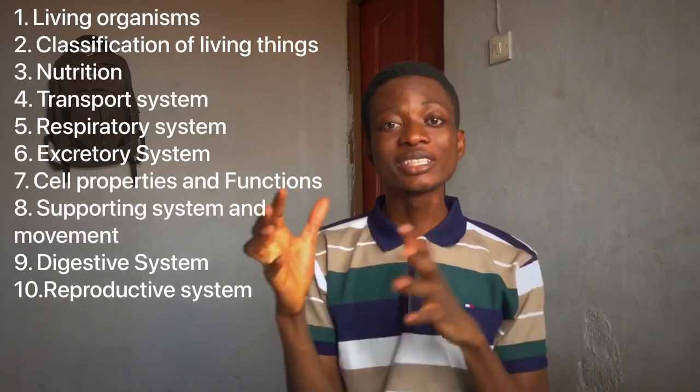The next topic is the reproductive system. Don't forget asexual reproduction — budding, conjugation, binary fission, and so on — and know which organisms perform each type. For sexual reproduction, learn the sex organs: in males the testis and its components, and in females the ovary, uterus, oviducts, and all the basic structures.